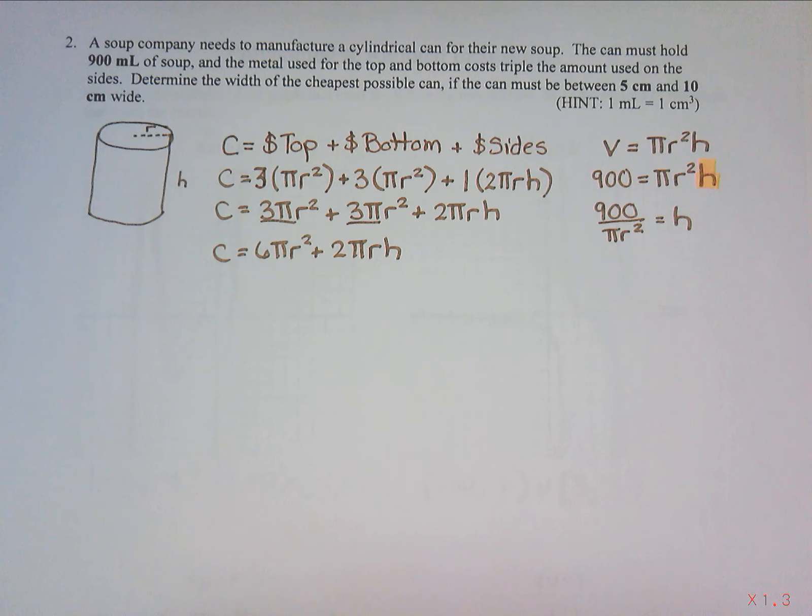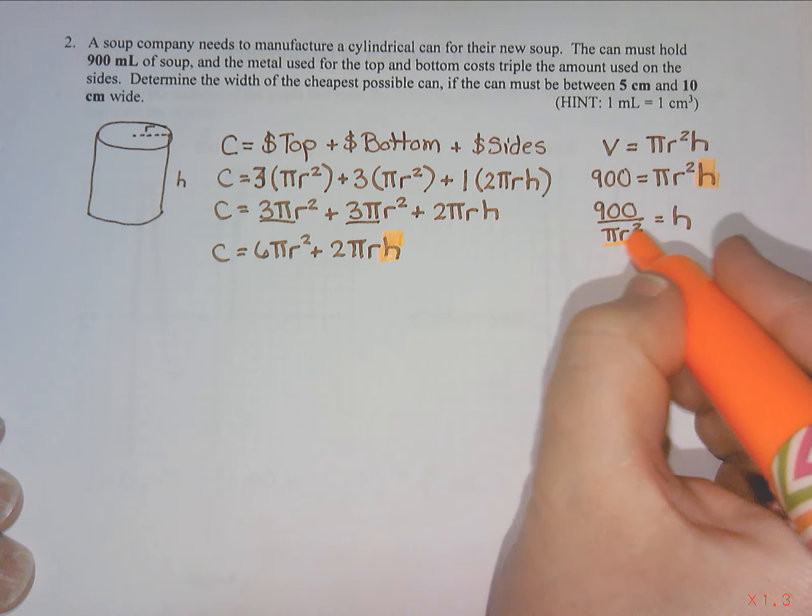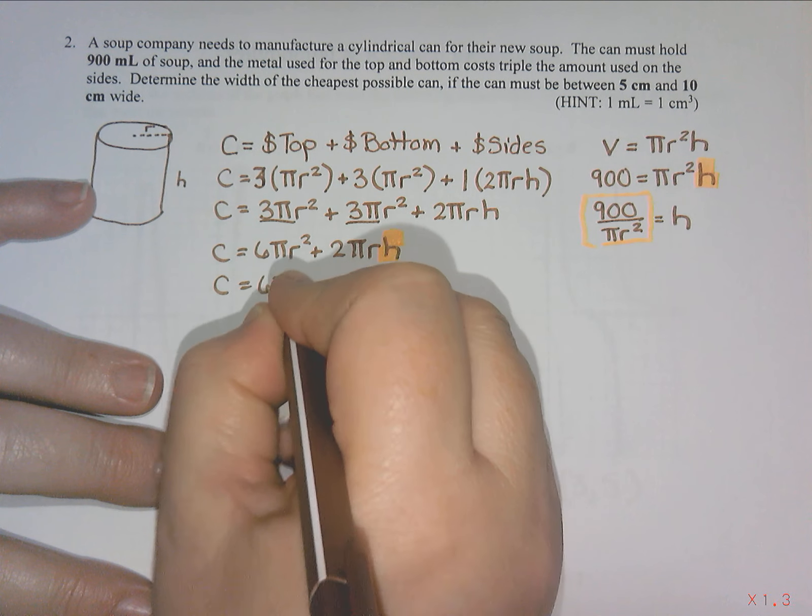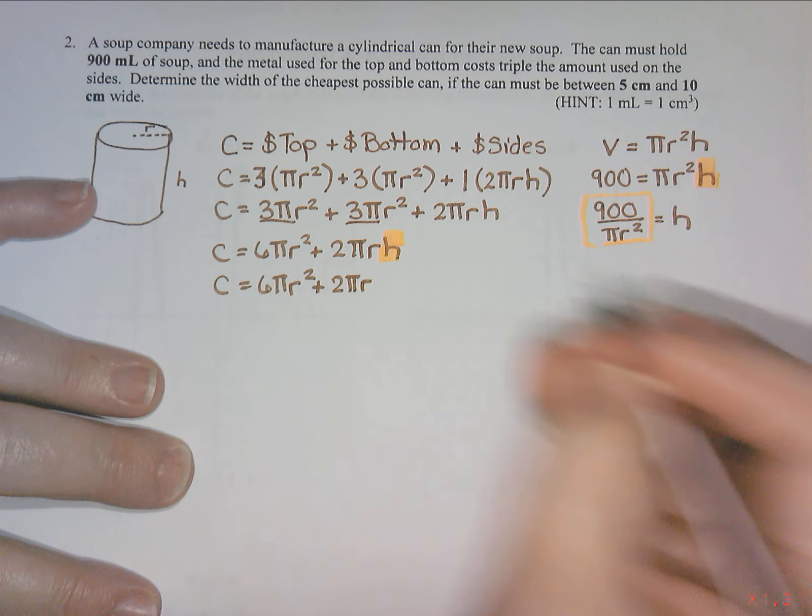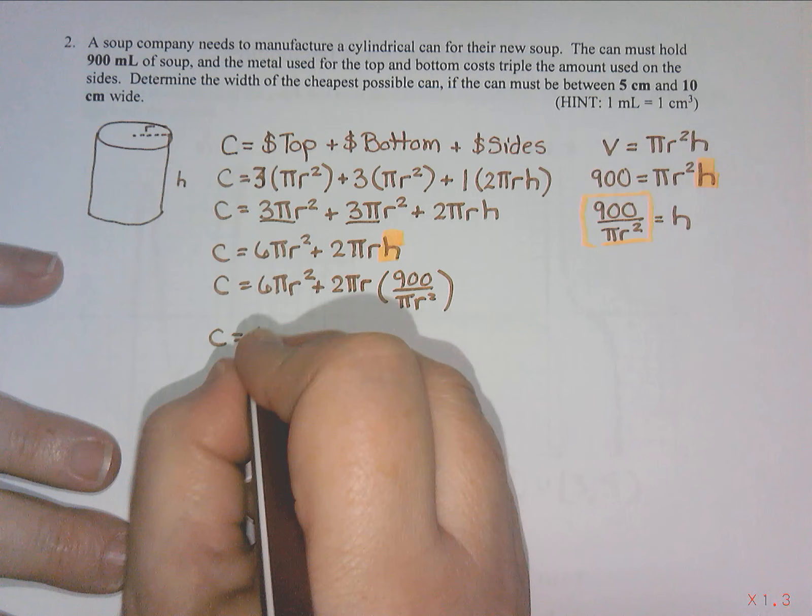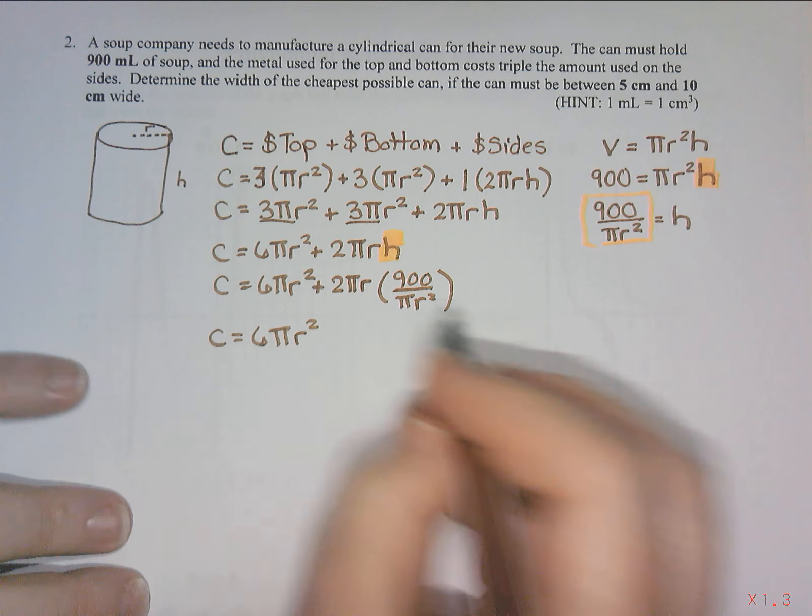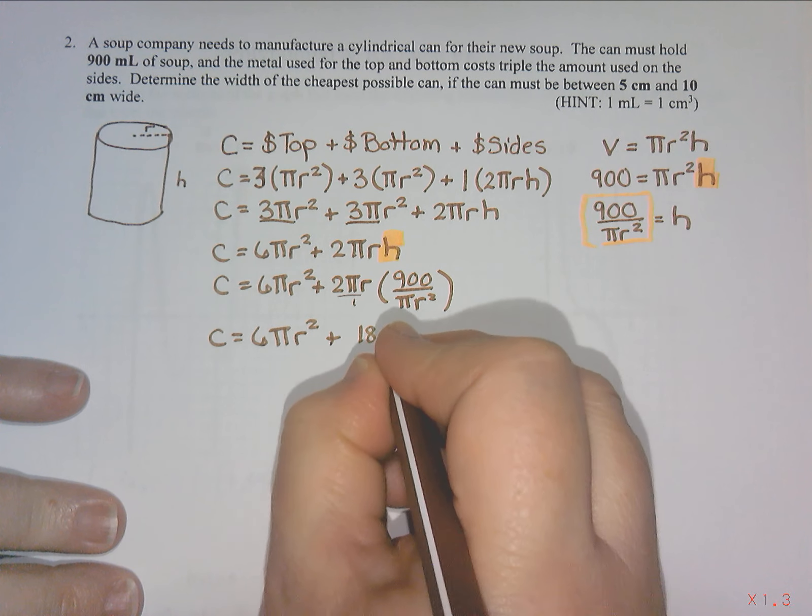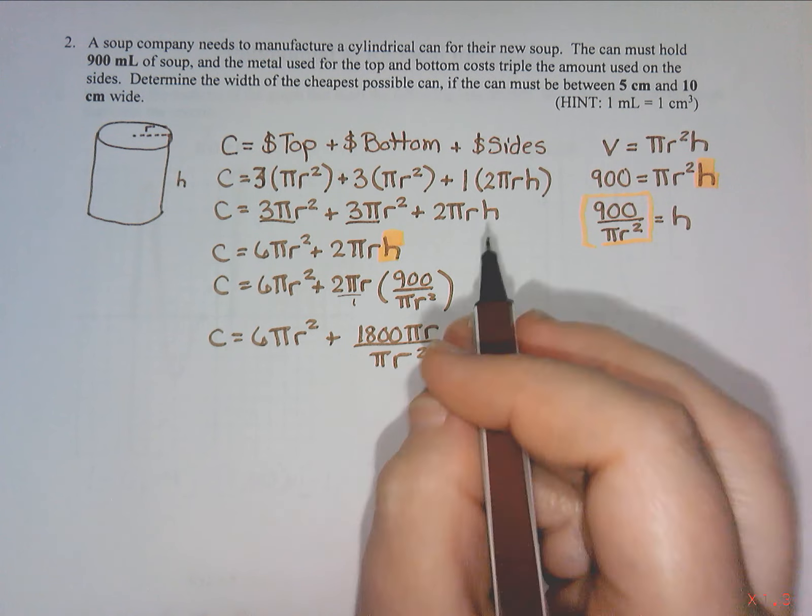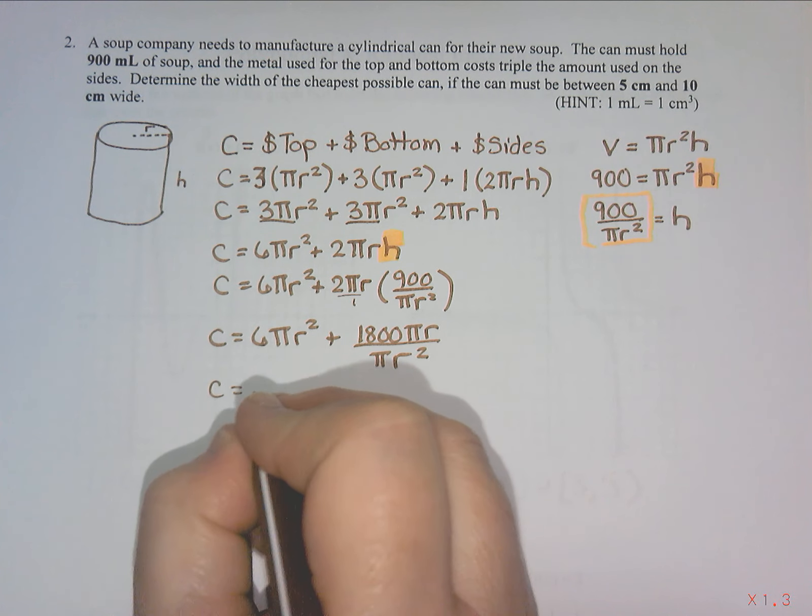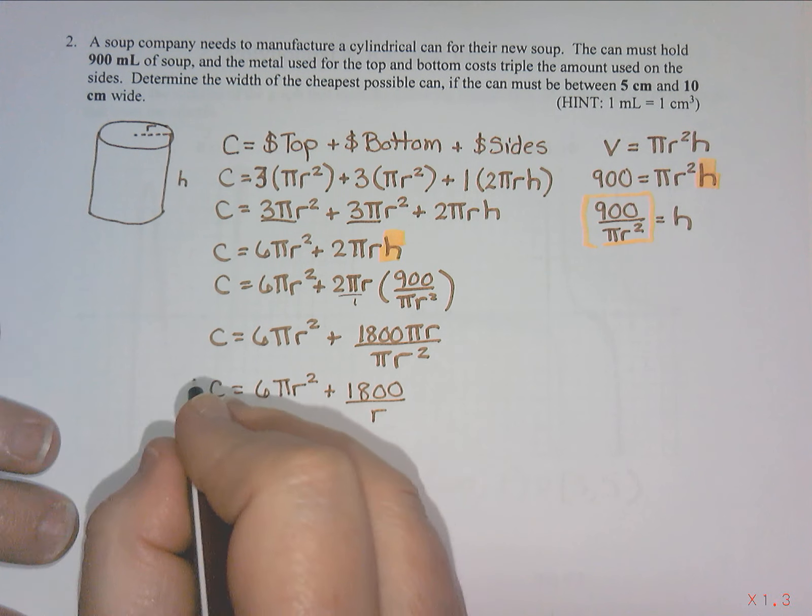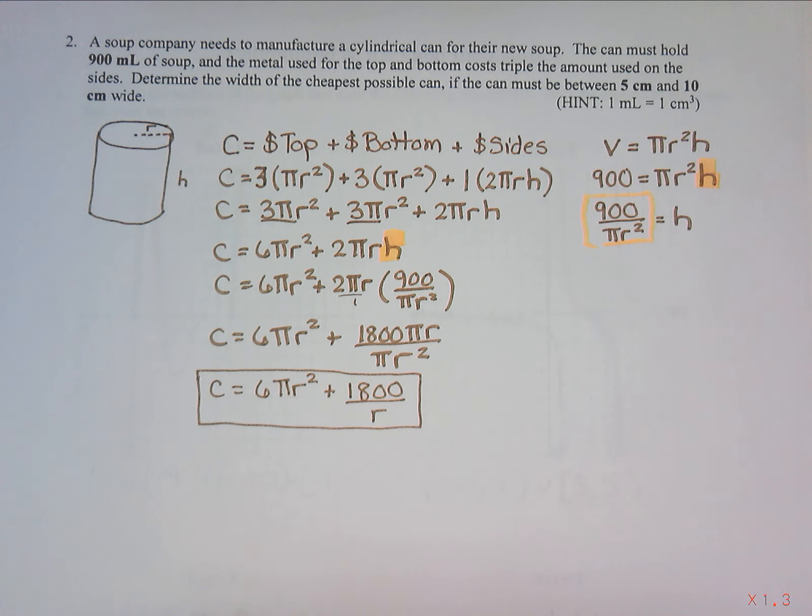I would say h is 900 divided by pi r squared. What I'm going to do is in my formula everywhere I see an h, I'm going to put in 900 over pi r squared. That means my cost is 6 pi r squared plus 2 pi r times 900 over pi r squared. I'm going to simplify that, so I have 6 pi r squared.